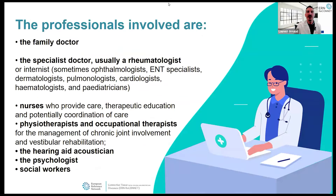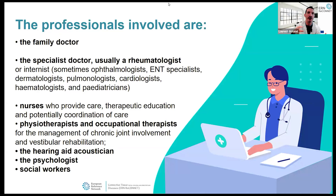The PNDS tells us what kind of professionals should be involved in the care of the disease. It gives a strong role to the family doctor, but also to specialist doctors — usually a rheumatologist or internist — as well as ophthalmologists, ENT specialists, hematologists, and pediatricians. Other professionals are also acknowledged: nurses, occupational therapists, hearing acousticians, psychologists, and social workers. I'm very happy these healthcare professionals are recognized in the publication.